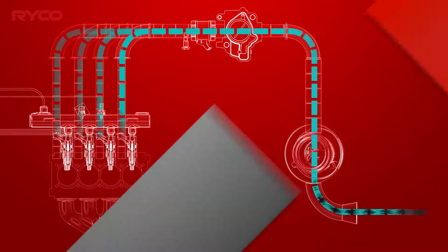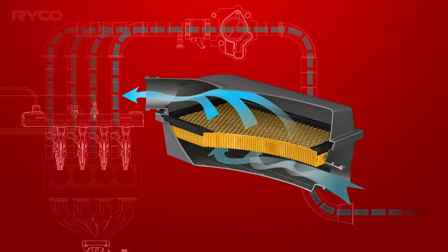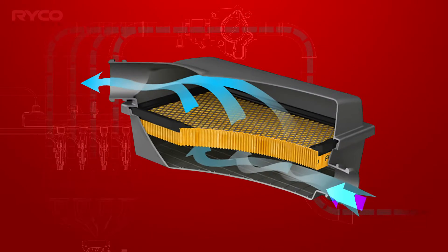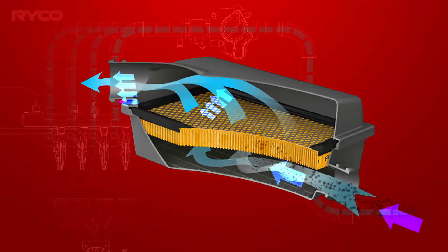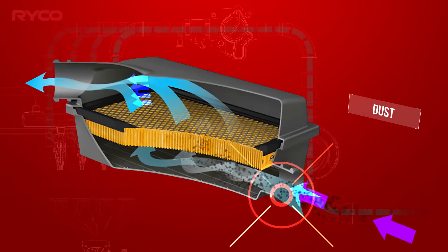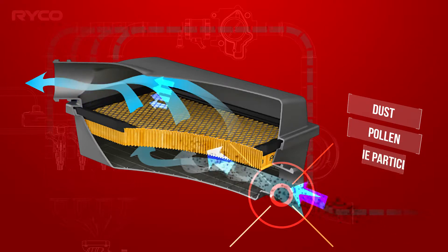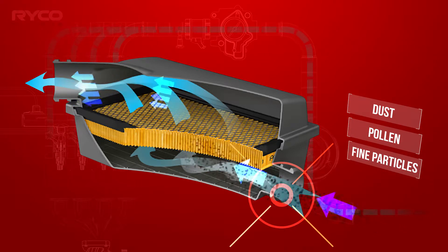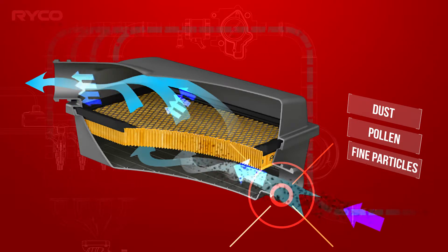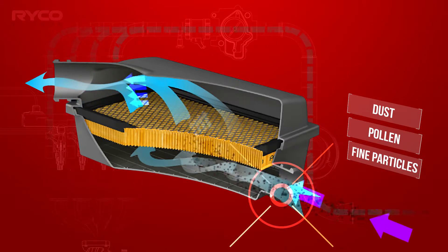Air enters the engine through a fresh air intake, which directs the stream to the air box where it passes through the filter. All ambient air typically carries impurities such as dust, pollen and other fine particles, which are abrasive to engine components and tend to contaminate delicate electrical sensors.